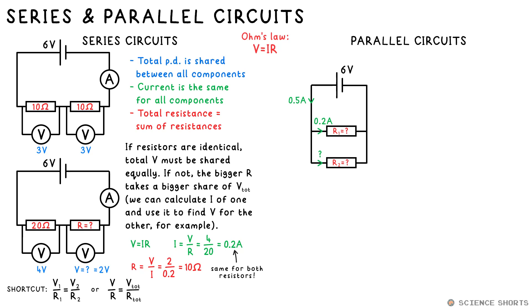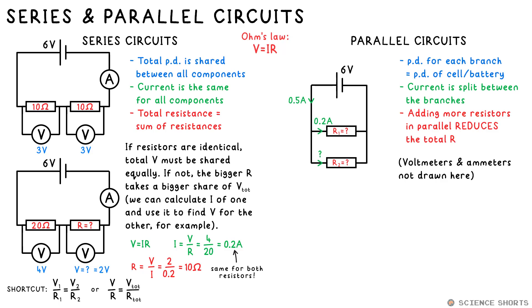The rules for parallel circuits are the opposite. The PD is the same for every branch, current is shared between each branch, and the more resistors you add in parallel, the lower the total resistance. This is because you're giving the current more route to move through the circuit, which means it can flow more easily. So if these two resistors are connected to the 6 volt battery in parallel, you know straight away that the PD for both has to be 6 volts. Voltage isn't split in parallel circuits. However, if we say 0.5 amps total current is flowing through the battery, and 0.2 amps of that is flowing through the top resistor, that must mean that there's 0.3 amps flowing through the bottom resistor.